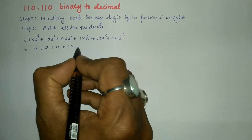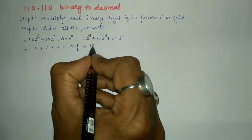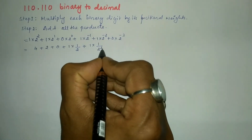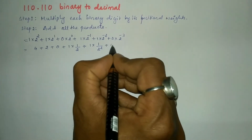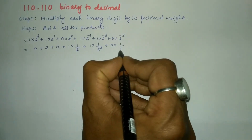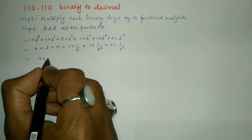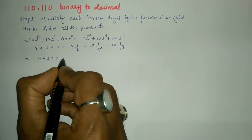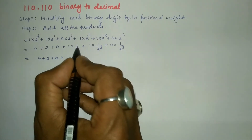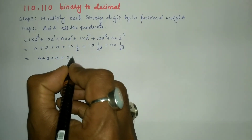So 2 to the power minus 1 can be written as 1 divided by 2. Similarly, plus 1 into 2 to the power minus 2 can be written as 1 divided by 2 to the power plus 2. And plus 0 into 2 to the power minus 3 can be written as 1 divided by 2 to the power plus 3. Further we simplify: 4 plus 2 plus 0, plus 1 into one-half which equals 0.5.